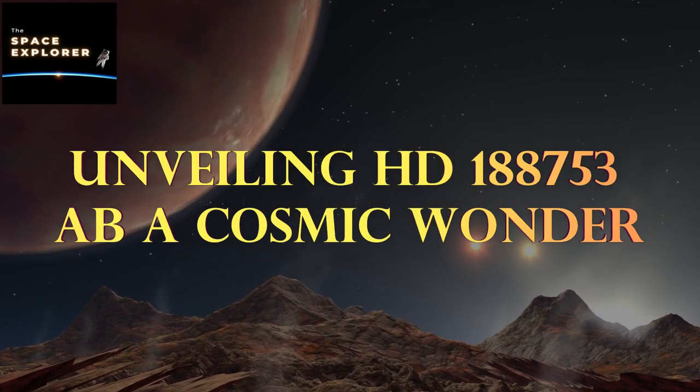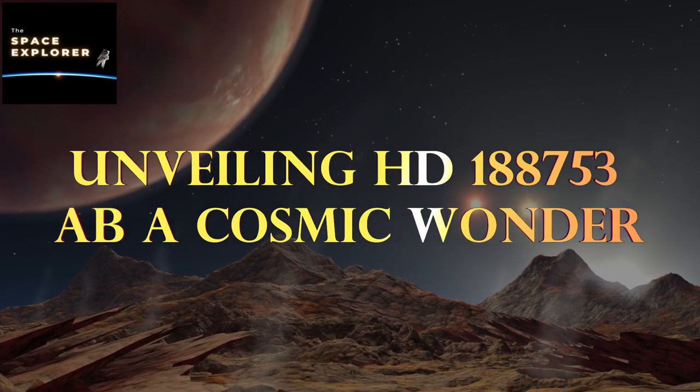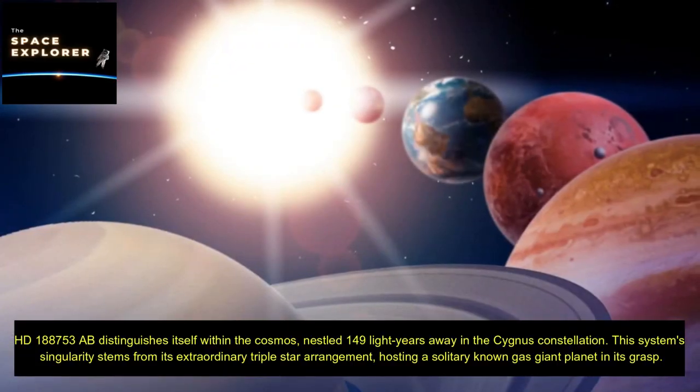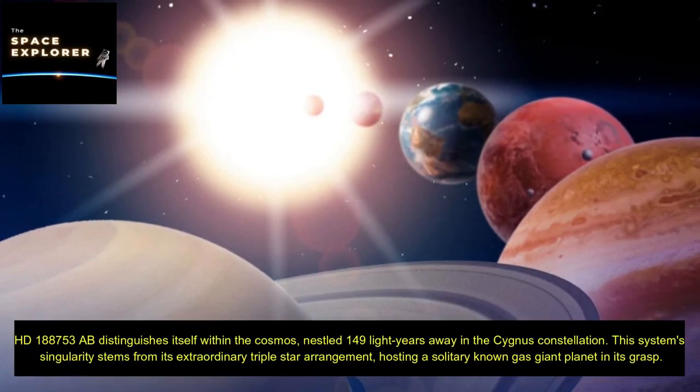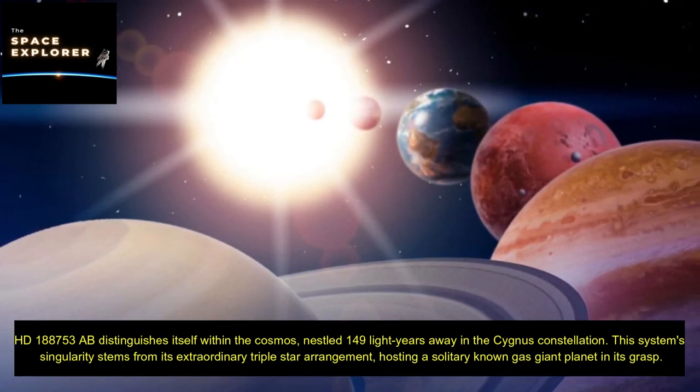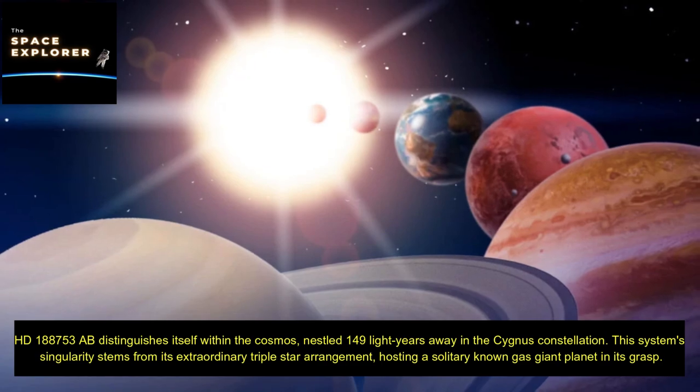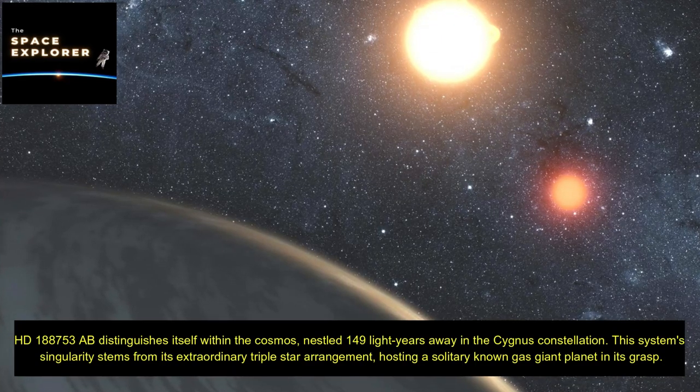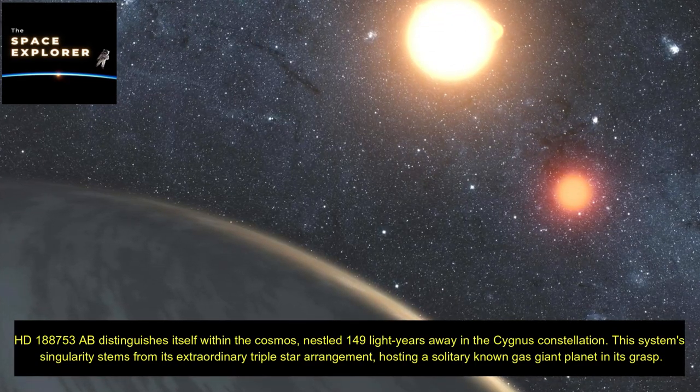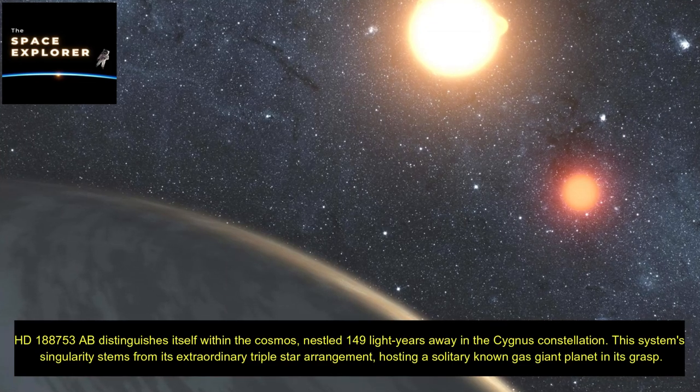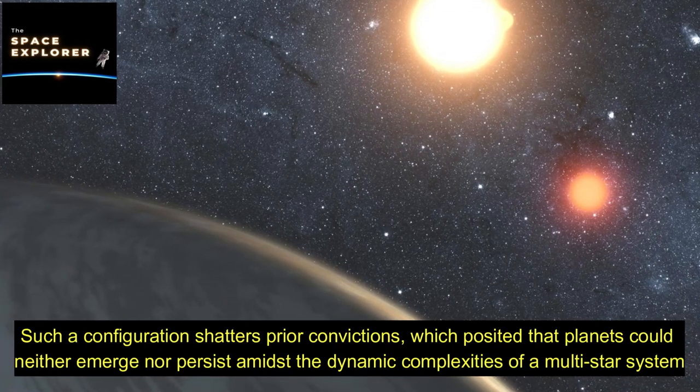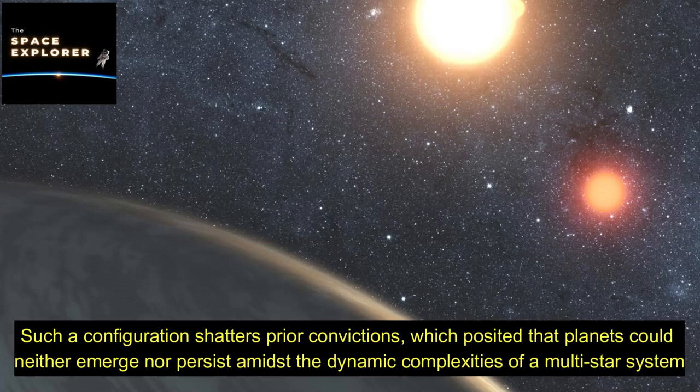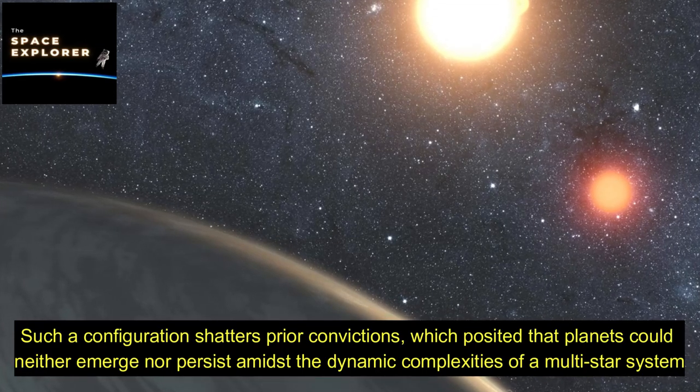Unveiling HD 188,753 AB, a cosmic wonder. HD 188,753 AB distinguishes itself within the cosmos, nestled 149 light-years away in the Cygnus constellation. This system's singularity stems from its extraordinary triple star arrangement, hosting a solitary known gas giant planet in its grasp. Such a configuration shatters prior convictions which posited that planets could neither emerge nor persist amidst the dynamic complexities of a multi-star system.